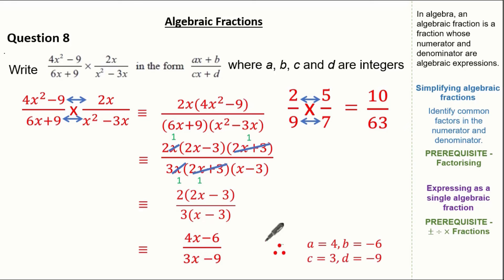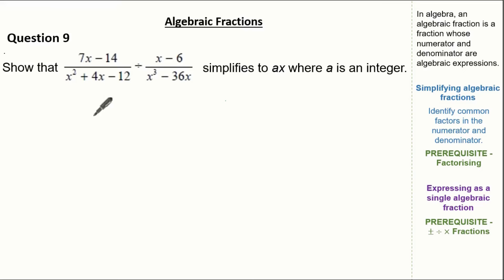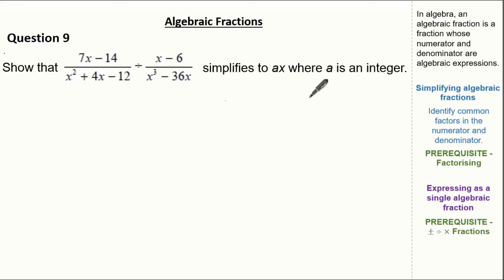So it's clear that a is 4, b is minus 6, c is 3 and d is minus 9. Now let's look at our last question. The question wants us to show that (7x minus 14) over (x squared plus 4x minus 12) divided by (x minus 6) over (x cubed minus 36x) can be simplified to ax where a is an integer. We have algebraic fractions and division, so we have to use our knowledge on dividing fractions.